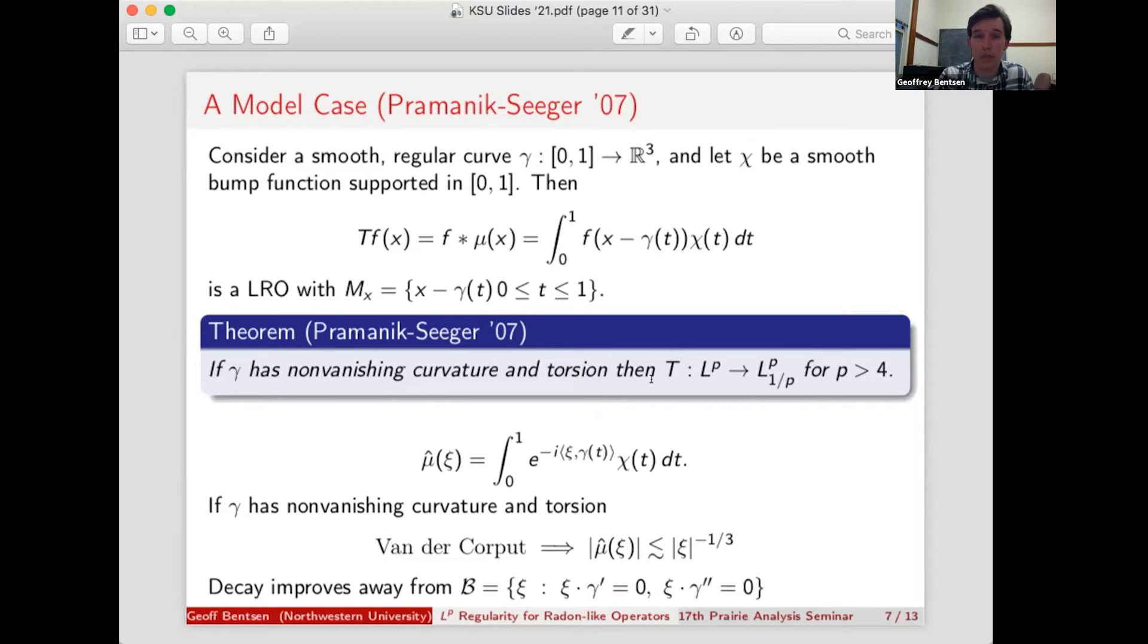Now what Pramanik and Seeger were able to show is that if gamma has non-vanishing curvature and torsion, then T has this optimal LP regularity provided P is greater than 4. And it turns out that's sharp except for the endpoint possibly, that's still open. And the proof relied on the fact that this was a convolution operator. So if you're looking at the L2 regularity of a convolution operator, you want to try to show Fourier decay of the convolution kernel. In this case, the Fourier transform of your measure.